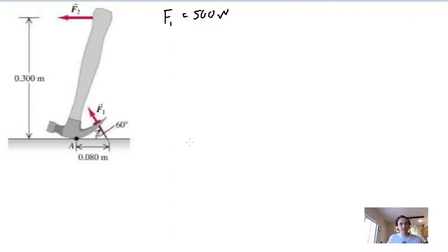Essentially we're going to set some torques equal to each other. We want the torque that's the result of this force 2 to equal the torque that's the result of this F1.